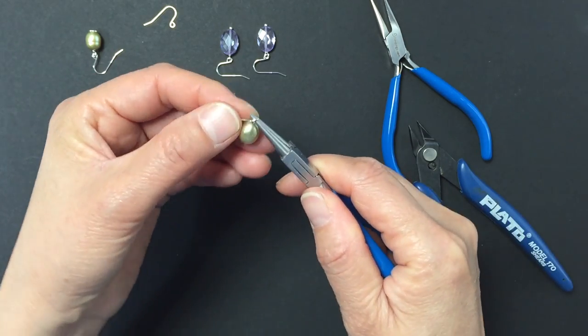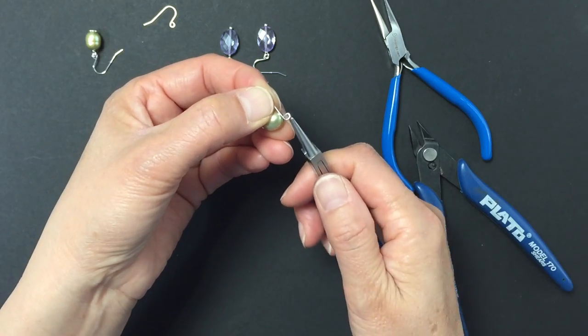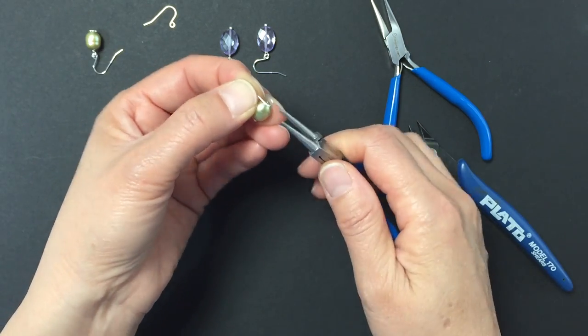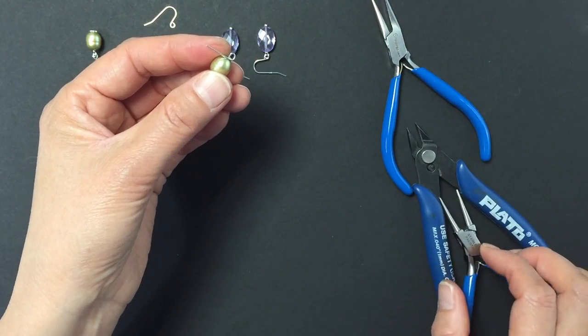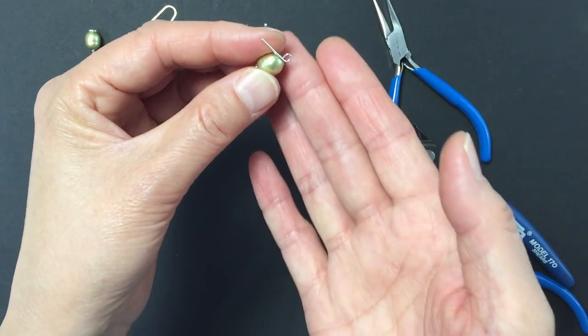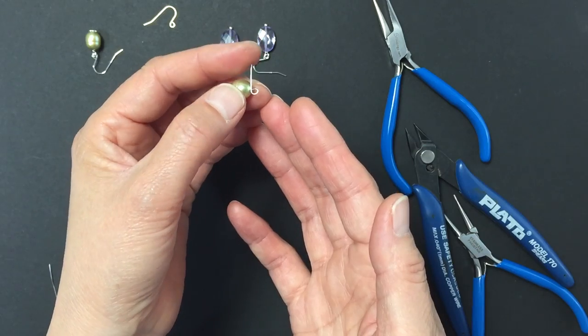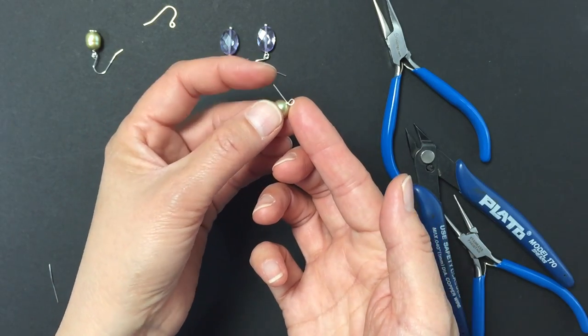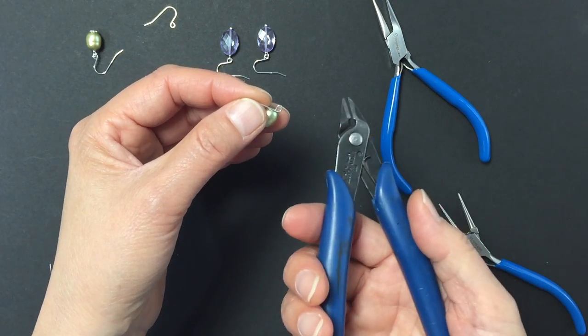Use the round nose pliers to make sure the loop is tight. Now clip off the excess wire with your wire clippers.